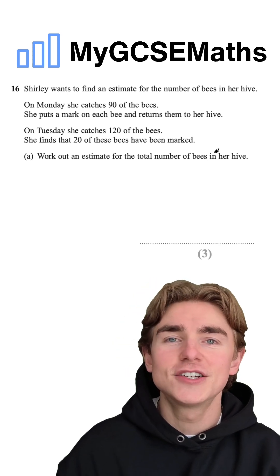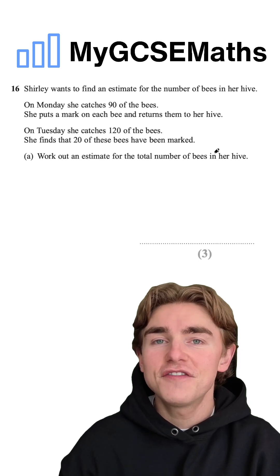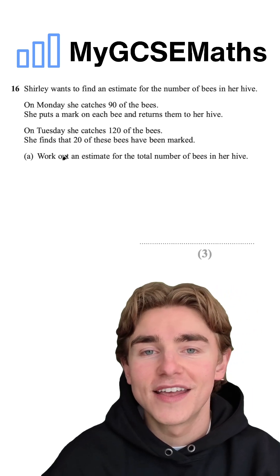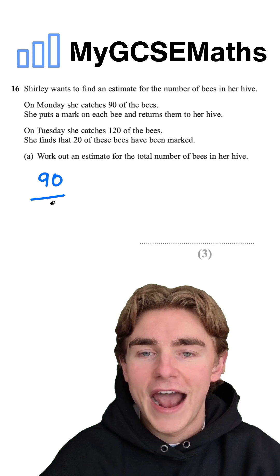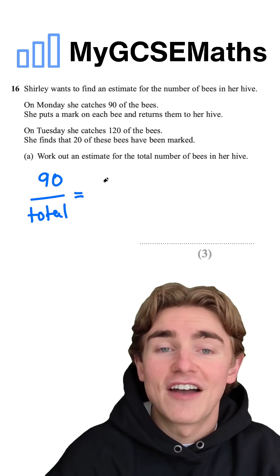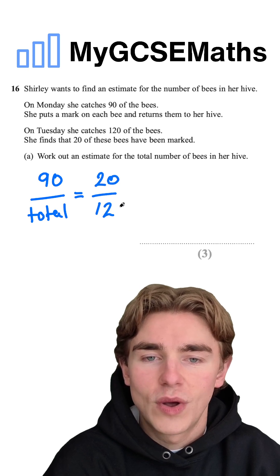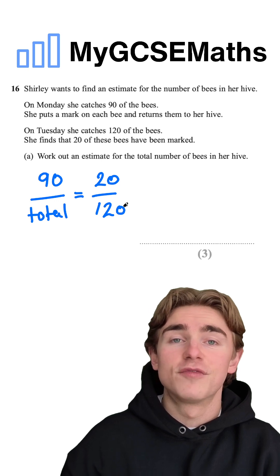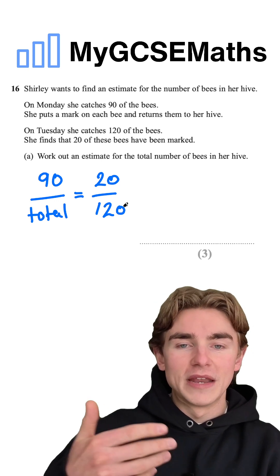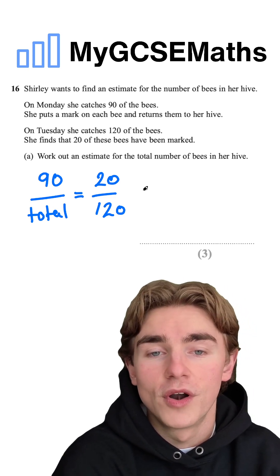What are we going to do? Well, we need to make sure that the fraction of the bees that have been marked is equal to the fraction of the bees afterwards that are caught and have that mark. So in other words, we can say that 90 — which is the number of bees that have been marked out of the total number of bees — is going to be equal to the fraction of the bees that have been caught that have been marked. So that's going to be 20 out of 120. So we say that 90 out of our total number is going to be equal to 20 over 120.